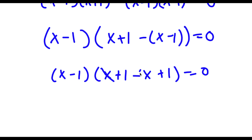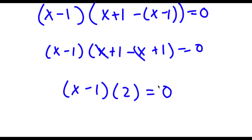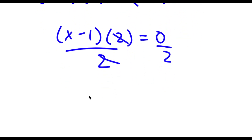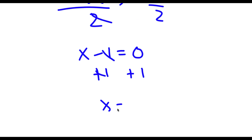Now x plus 1 minus x plus 1 — I'm left with x minus 1 times 2 is equal to 0. Now if I divide both sides by 2, these two cancel out, so I'm left with x minus 1 is equal to 0. If I simply add 1 on both sides I get x is equal to 1, so this is my answer.